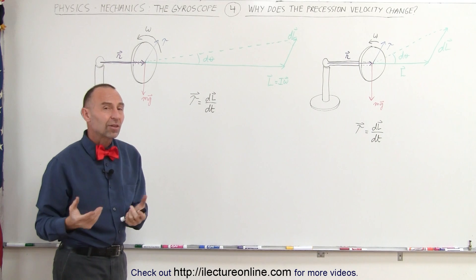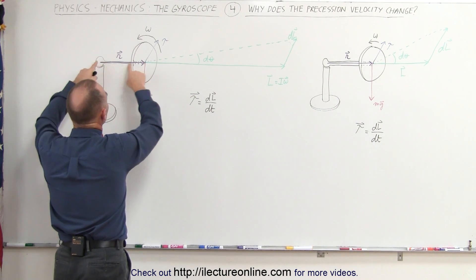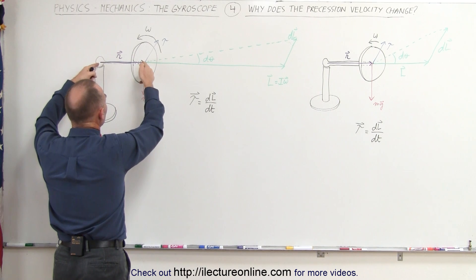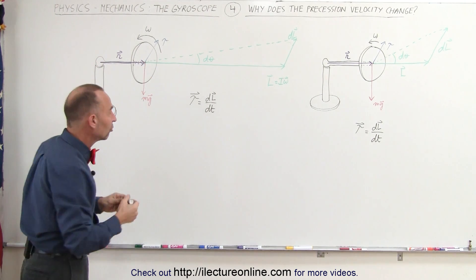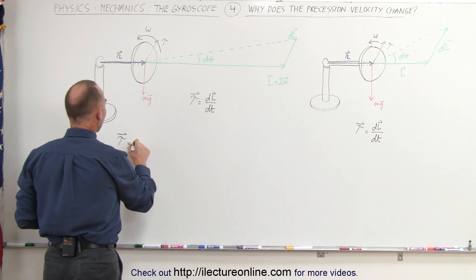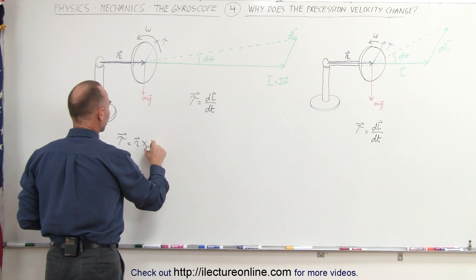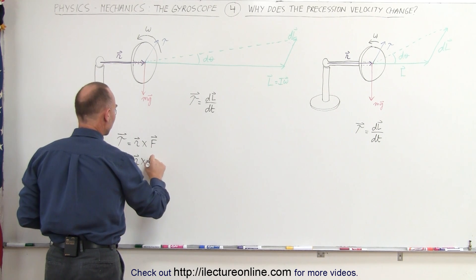Now the torque stays constant, that's the key to all this. The torque stays constant because the R, the position vector, doesn't change, and the weight, the mg of the gyroscope doesn't change. And since the torque is caused by the cross product of the position vector and the force, which is equal to R cross mg,